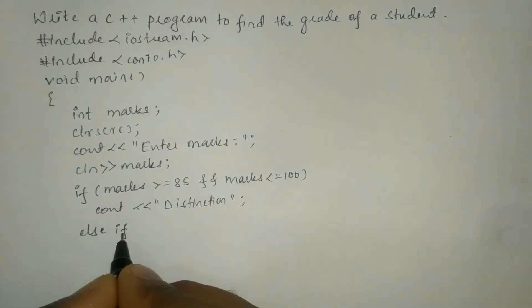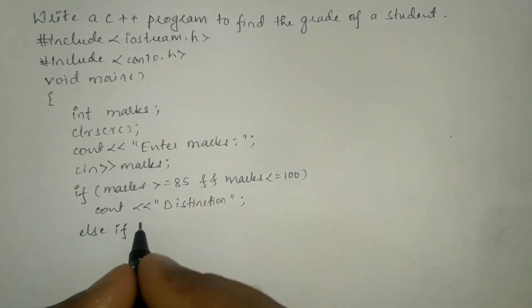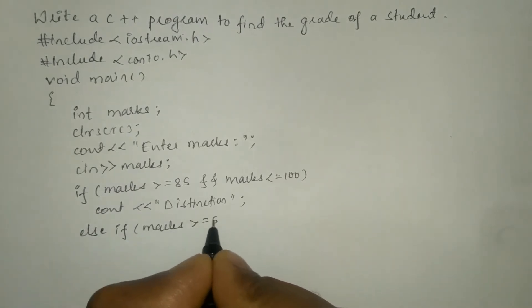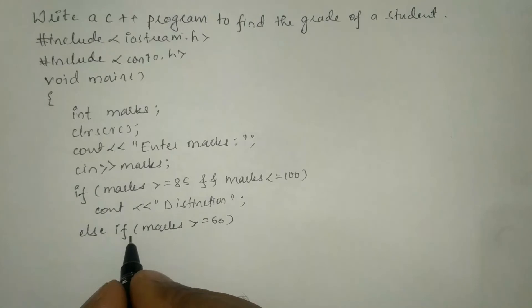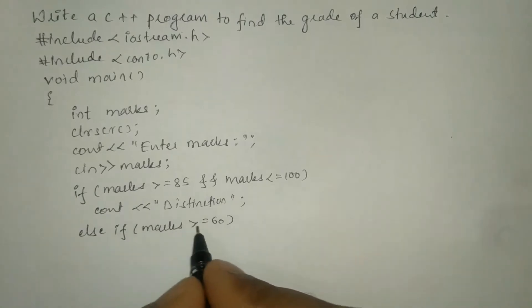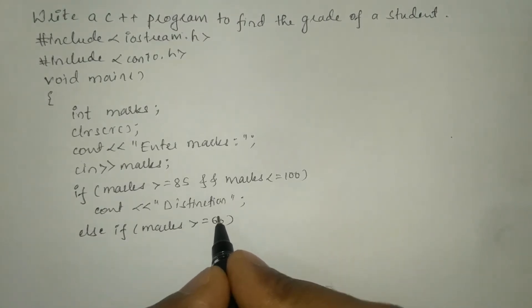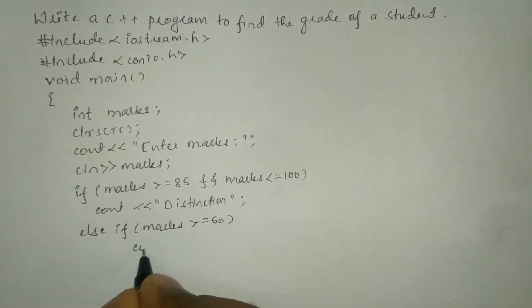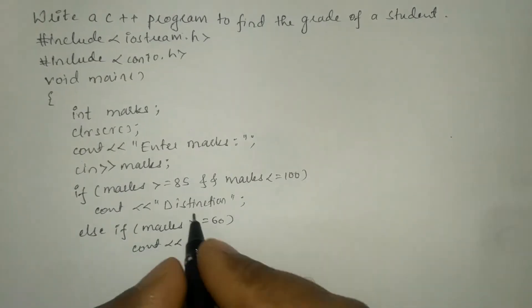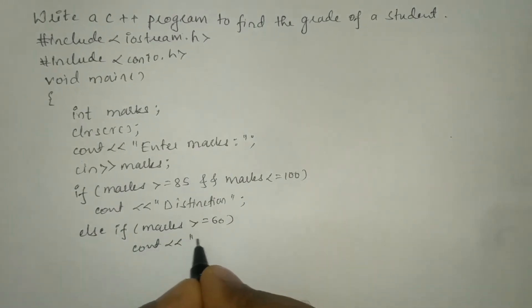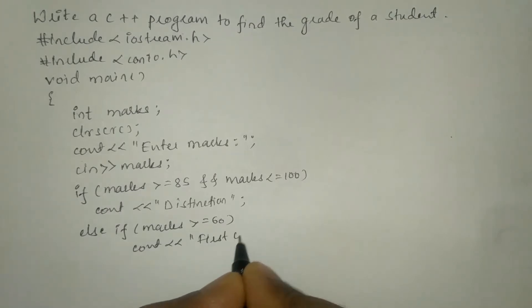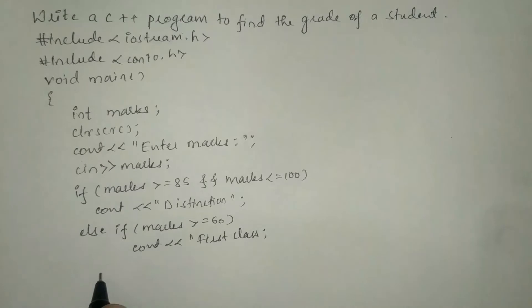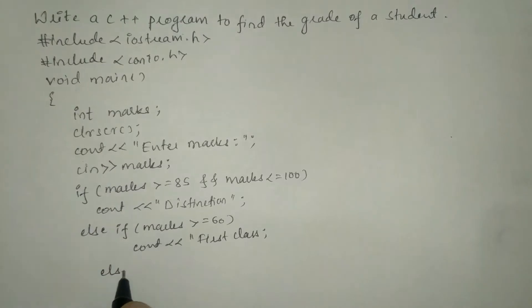If the distinction condition is not true, we check the next condition using else if: marks is greater than or equal to 60. If marks is 60 or above, it has to print a cout statement with 'first class' in double quotation marks and then put a semicolon.